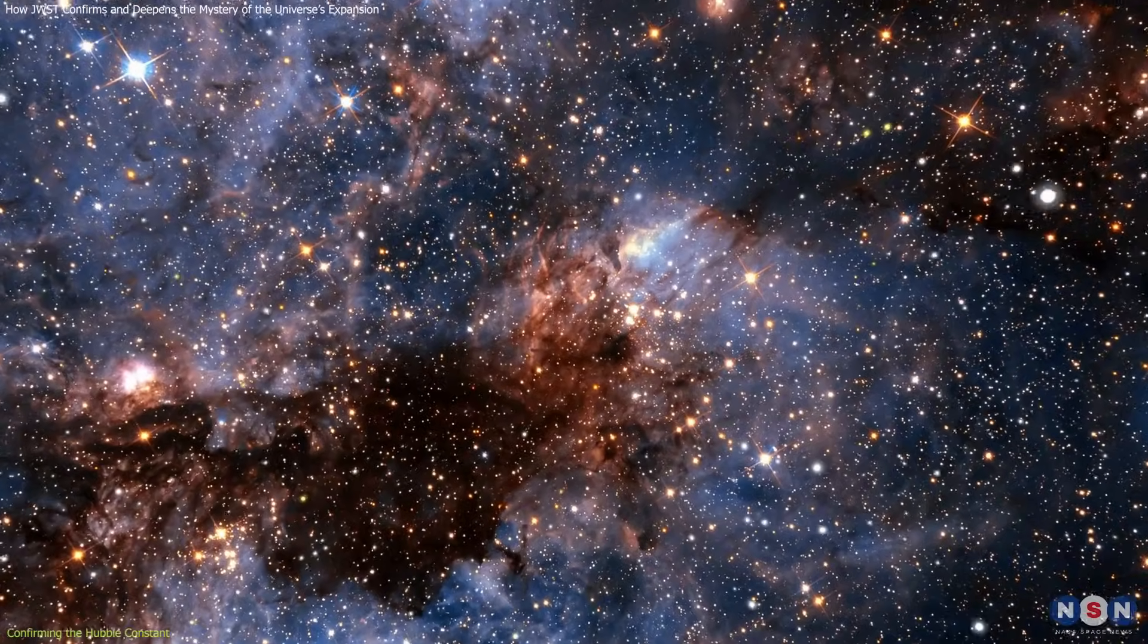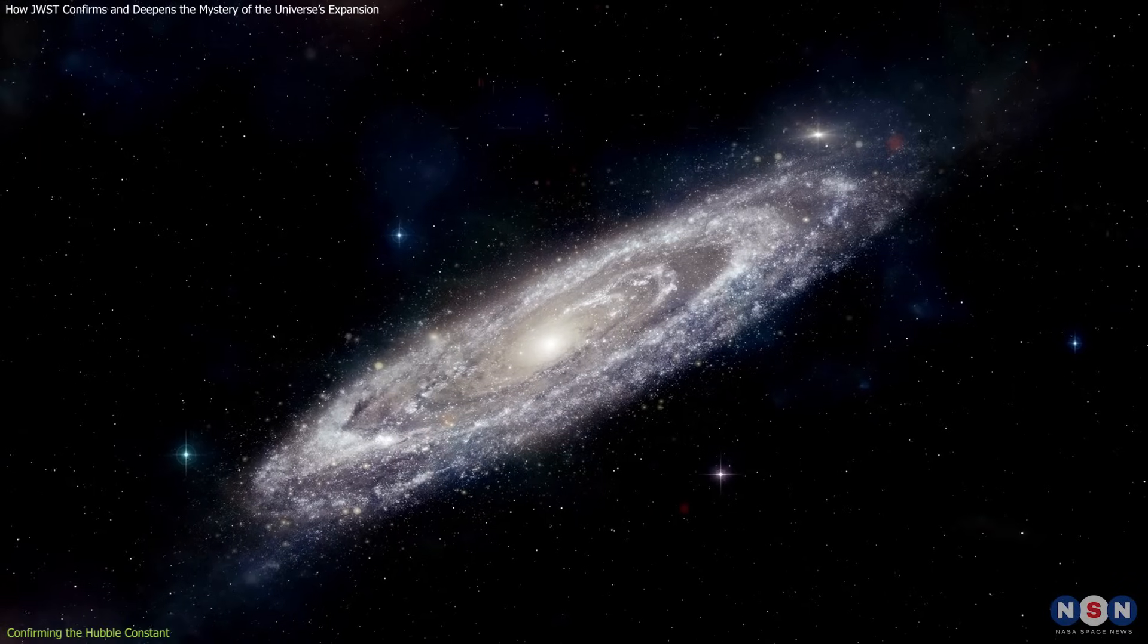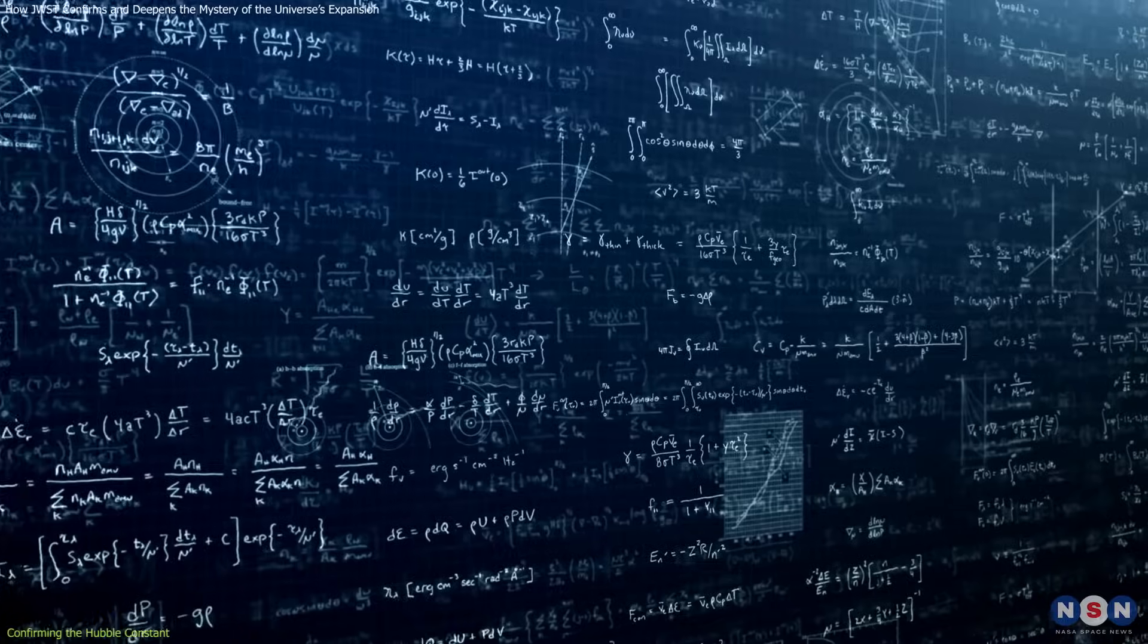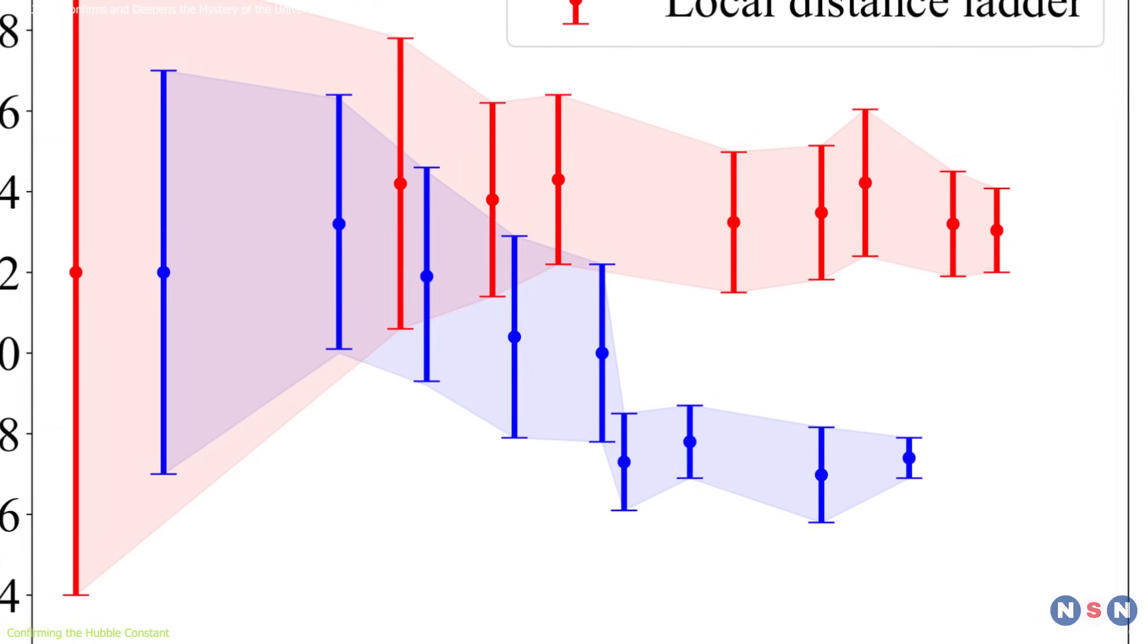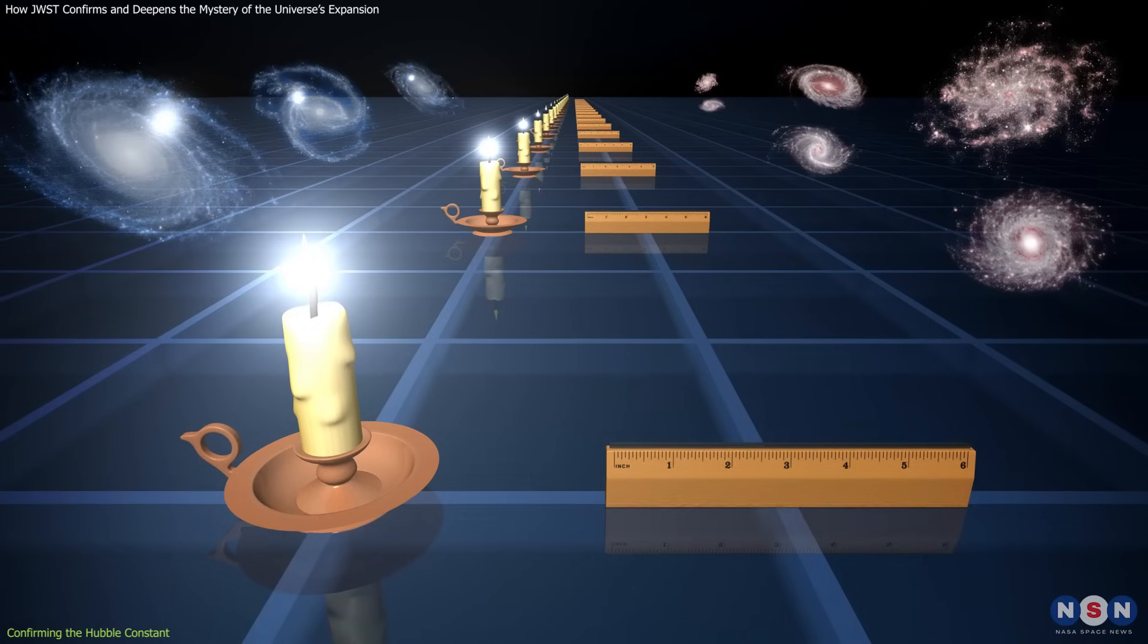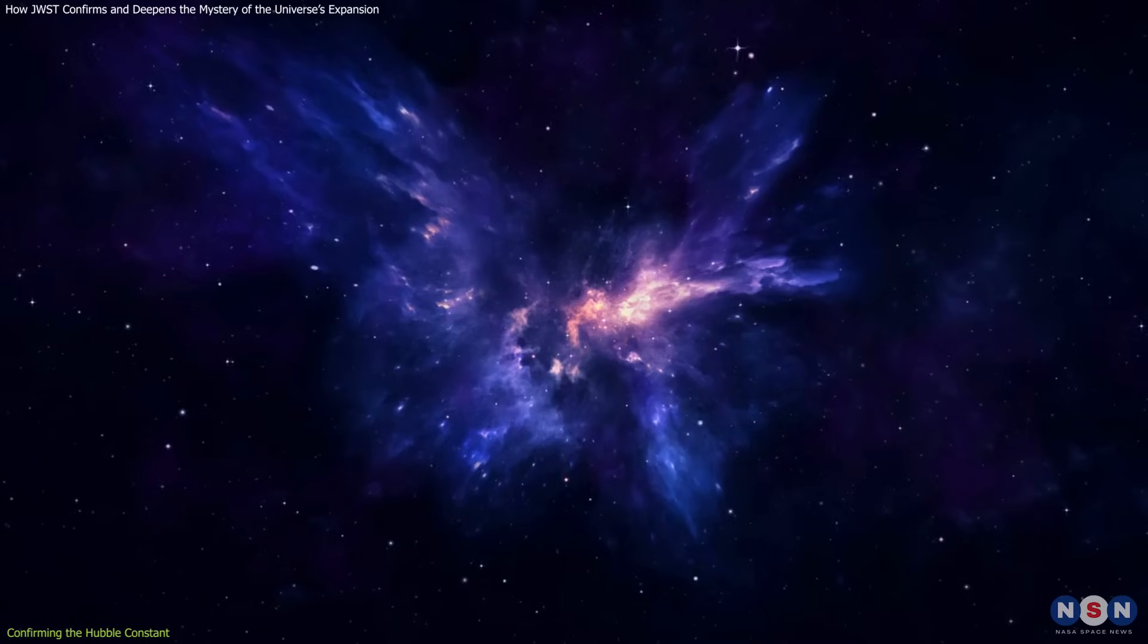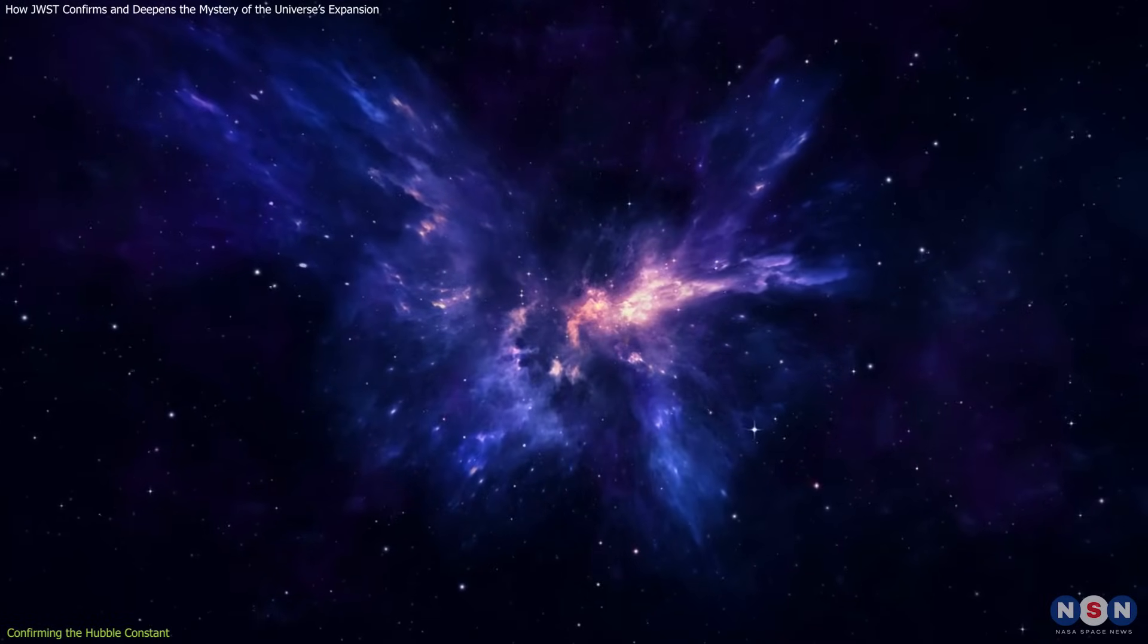So what does this mean for our understanding of the universe and its underlying physics? It means that we are facing a major challenge and an exciting opportunity. We are either missing something in our observations or in our theories, or both. We need to find out what is causing this discrepancy and what it implies for our model of the universe. Is there something wrong with our standard candles or rulers? Is there something wrong with our theory of gravity or dark matter or dark energy? Or is there something else that we have not considered yet?